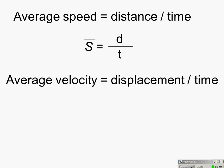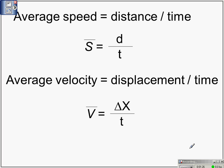Average velocity equals displacement divided by time. The two look similar but they are different in that displacement is a vector and distance is not. Displacement is symbolized delta x, and dividing it by time gives us velocity. Velocity is a vector just like displacement, and the line over the v means it's an average.